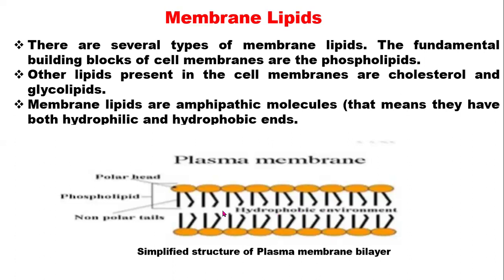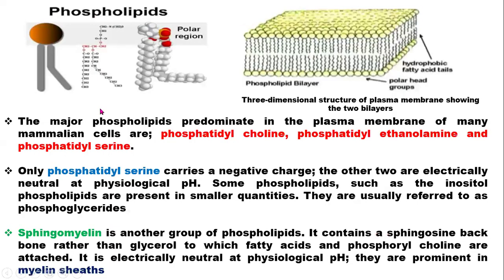This is the hydrophobic environment, with a polar head on the outside and a non-polar region inside. This is an example of a phospholipid. Looking at the structure, the circular region is the polar region, and the long chain is the fatty acid chain. This is from the glycerol backbone, and this is the phosphate group found in the phospholipid, and this is the fatty acid.